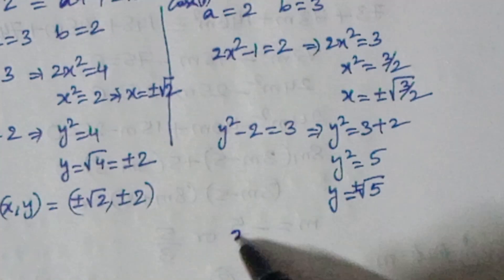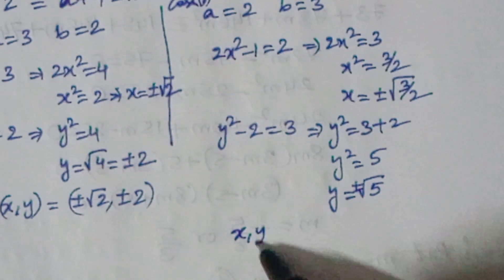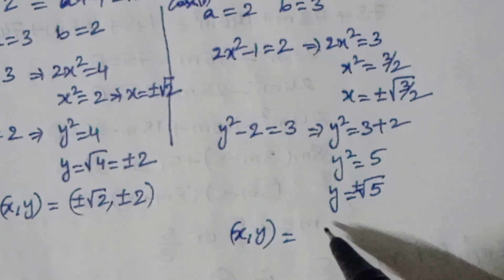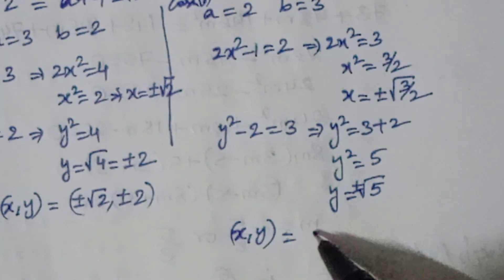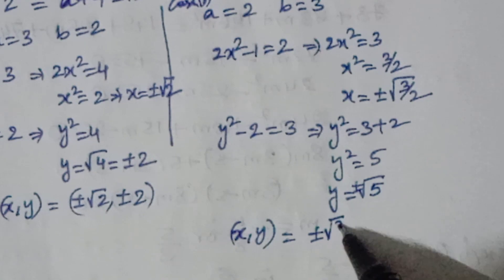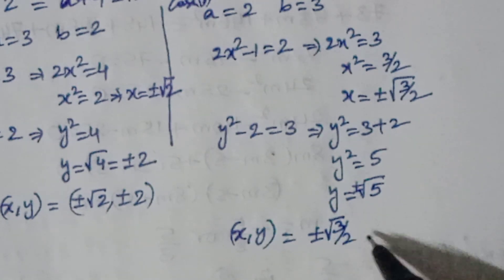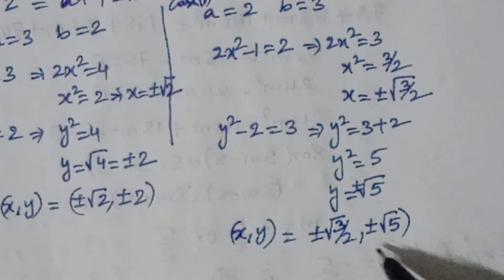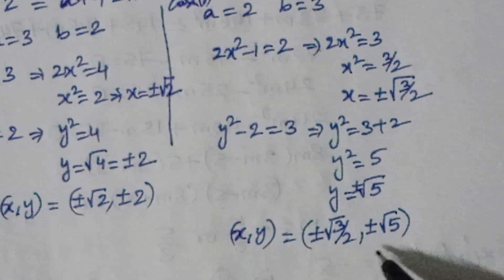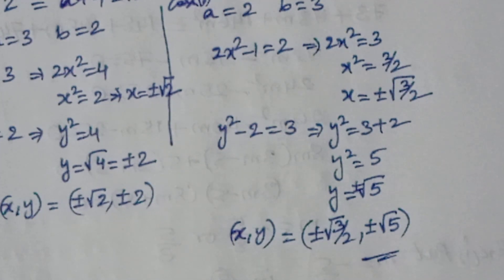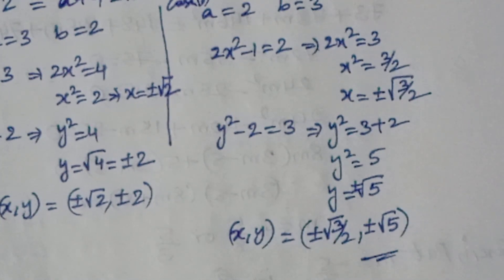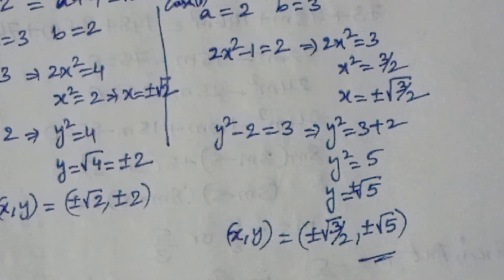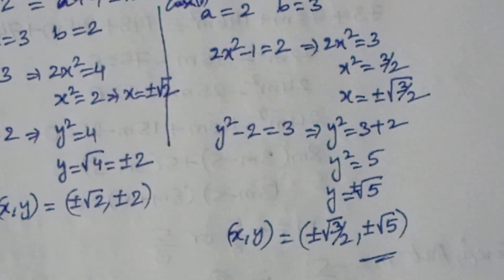In Case 2, the values are x = ±√(3/2) and y = ±√5. I hope you liked the video. Thank you for watching I On CG Max. If you liked the video, please subscribe and share it with your friends.